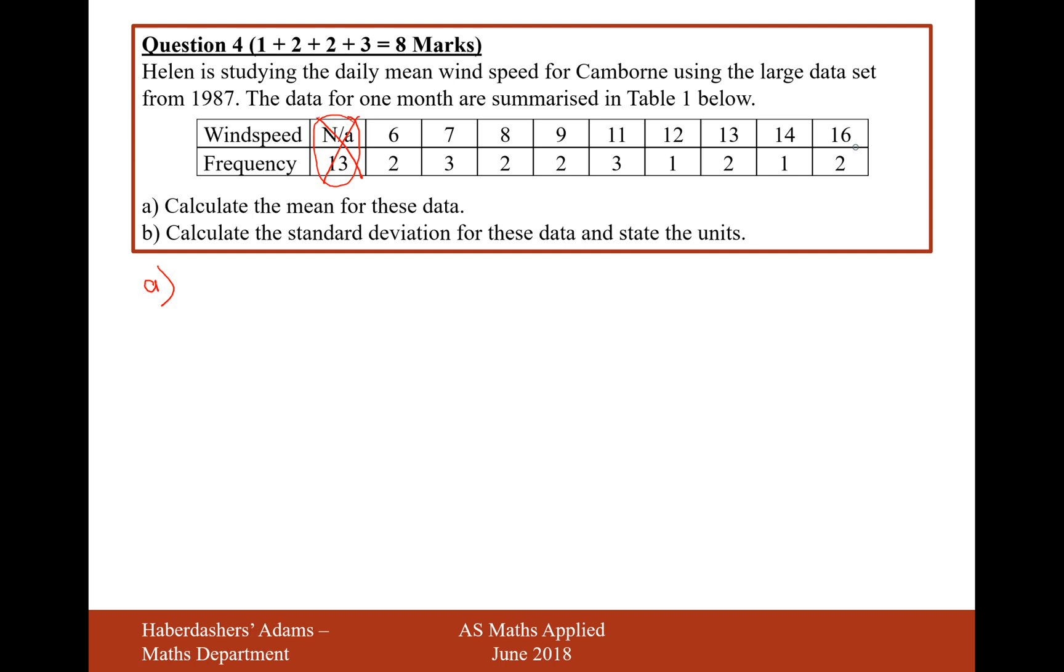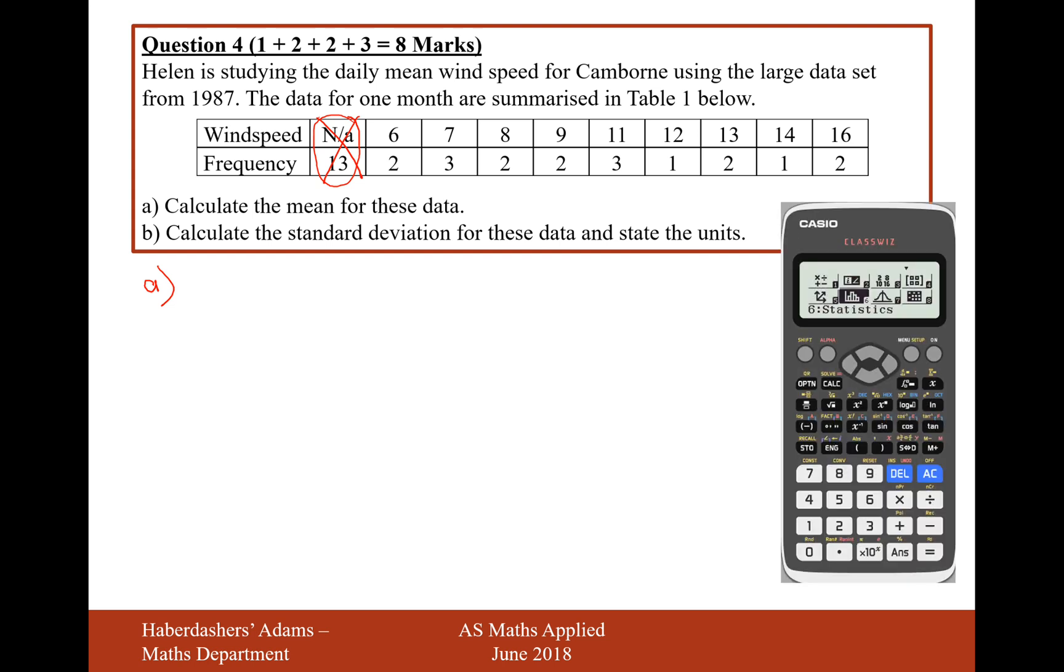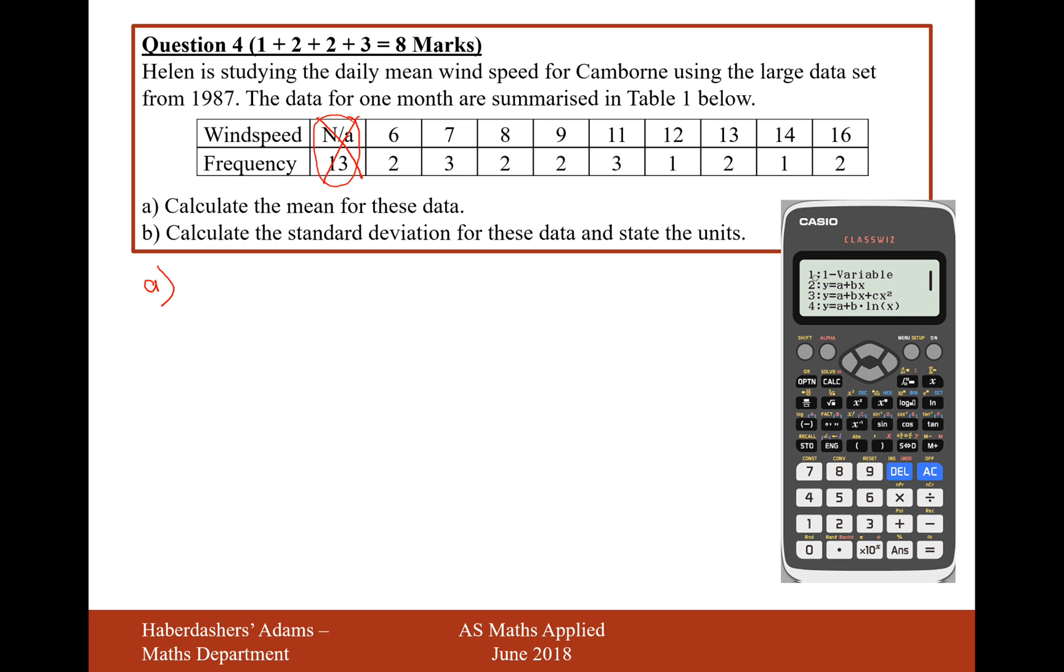Divide by how many days we've got, which is 18, and then we'll get our answer. Alternatively, you could use your calculator to answer this for you. So if you go into mode 6 of your calculator and go to the 1 variable mode, so hit option number 1.